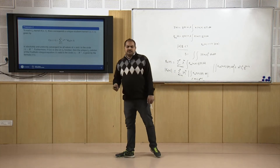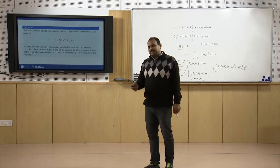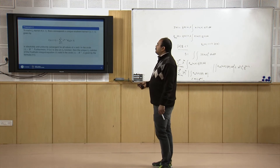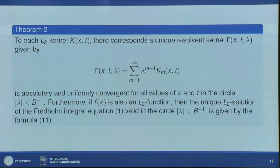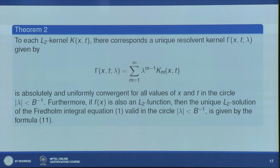For every L² kernel k(x,t) there corresponds a unique resolvent kernel γ(x,t,λ), defined by Σ_{m=1}^{∞} λ^{m-1} k_m(x,t), which is absolutely and uniformly convergent for all x, t in the circle |λ| < b⁻¹. Furthermore, if f(x) is also an L² function, then the unique L² solution of the Fredholm integral equation is valid in the circle |λ| < b⁻¹.